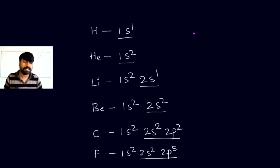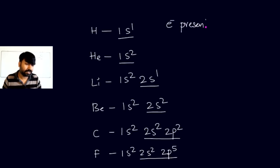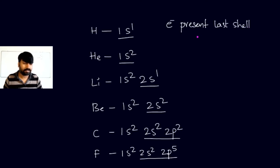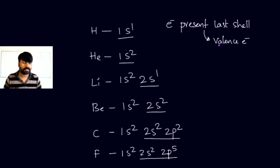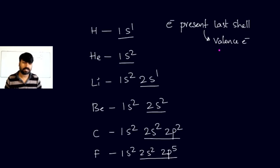Lewis dot structures represent the valence electrons — the electrons present in the last shell are called valence electrons. The representation of valence electrons around the symbol is called Lewis dot structures.